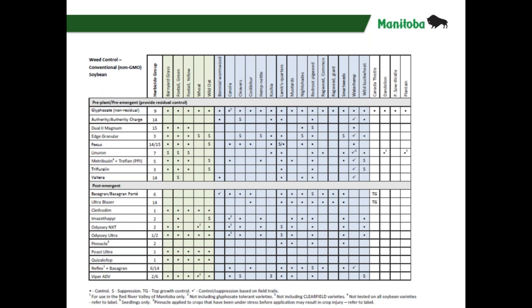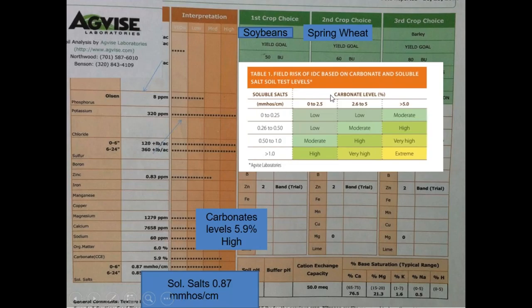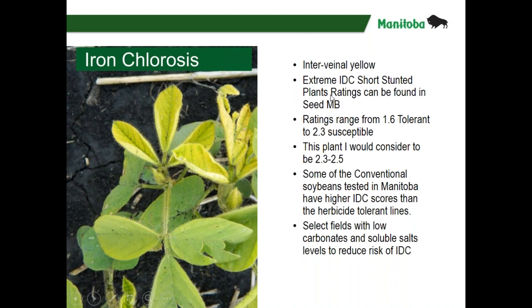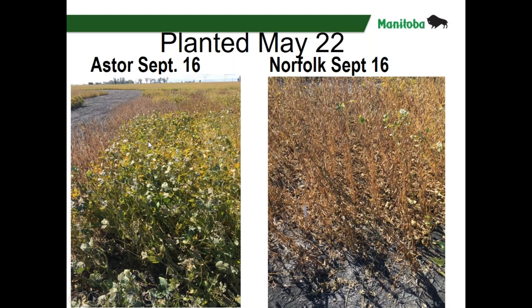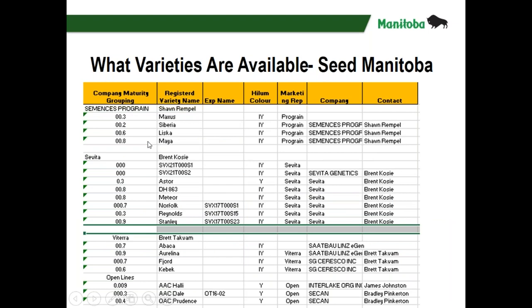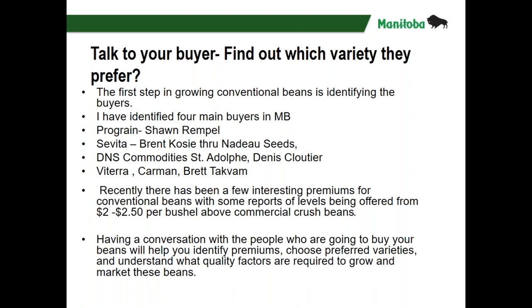A question about where the main buyers are located and what their delivery points look like. Right now most buyers are in the Carmen–Portage area. Nido Seeds is up in the Ste. Rose area; Sevita is there as well; DNS Commodities is in the Souris–Tara area; Viterra would be Carmen; and Prograin has their own sourcing areas. Most of the activity is in the east, but there is also a delivery point in Oak River with Prograin for western Manitoba growers. Talk directly to the companies about their delivery programs if you're further west.